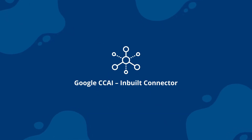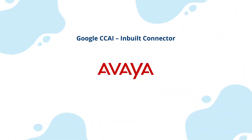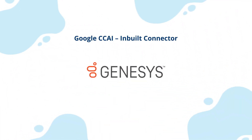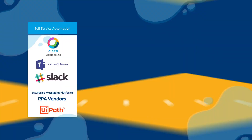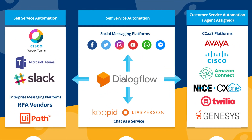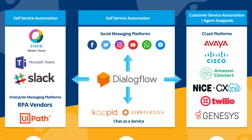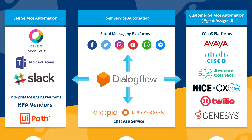Google CCAI has an inbuilt connector to leading contact center solutions — Cisco, Avaya, Genesys and many more. The Google CCAI out-of-the-box connector supports most of these contact center solution versions. Servion helps to integrate with legacy versions and non-supported contact center solutions using a third-party MRCP connector.